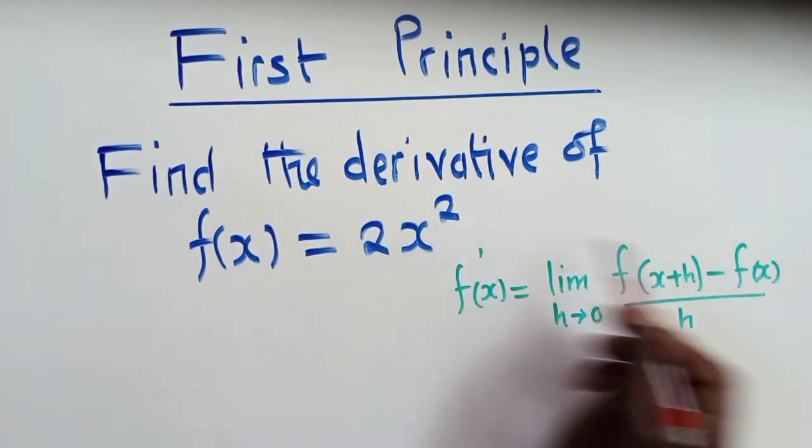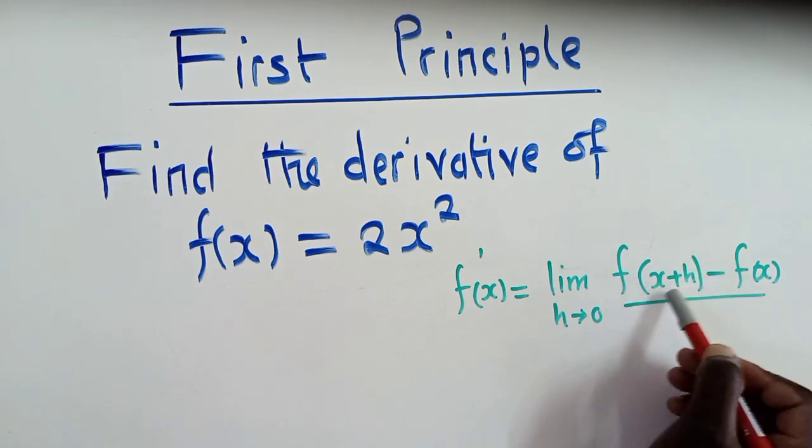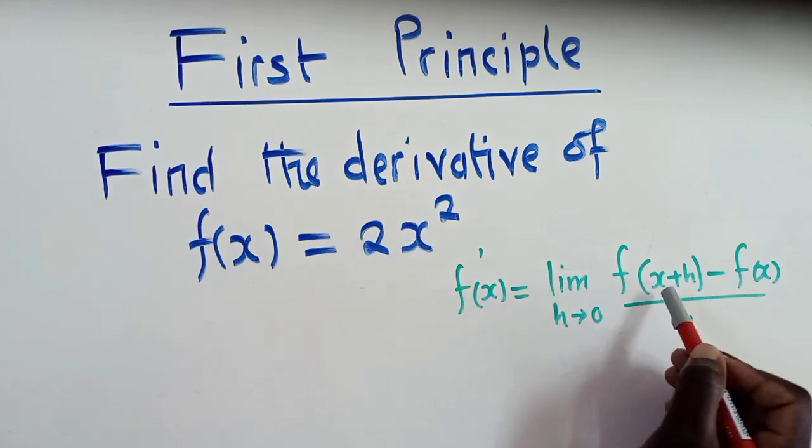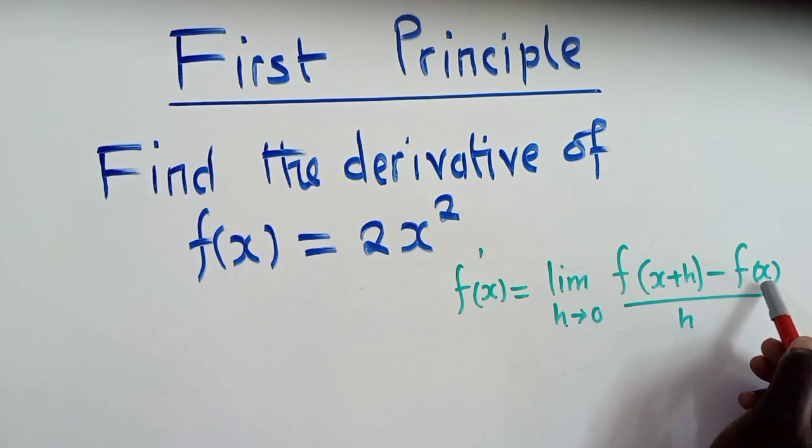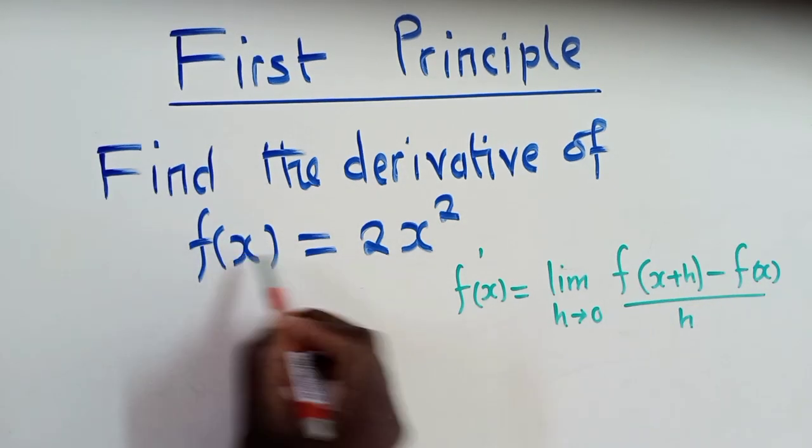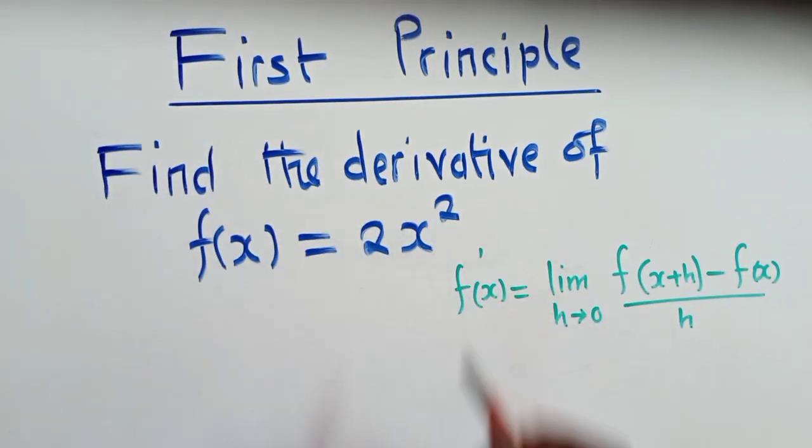And this power will come right here because it's a power. So all this thing right here will be x. Where x is, is where we're going to put all this thing. And f(x) would just be what we've been given. This is f(x), meaning we will just copy the given function.